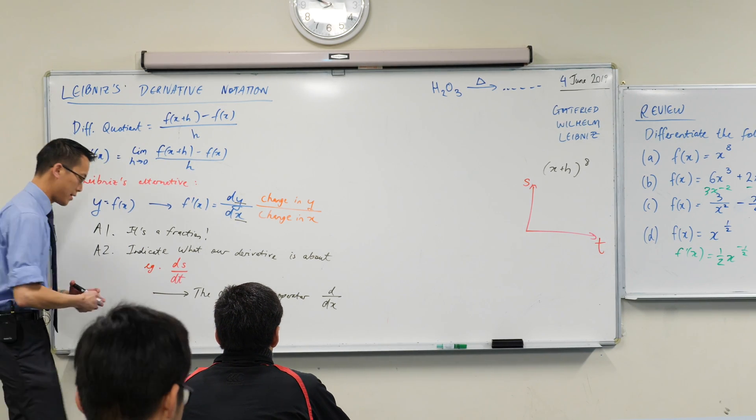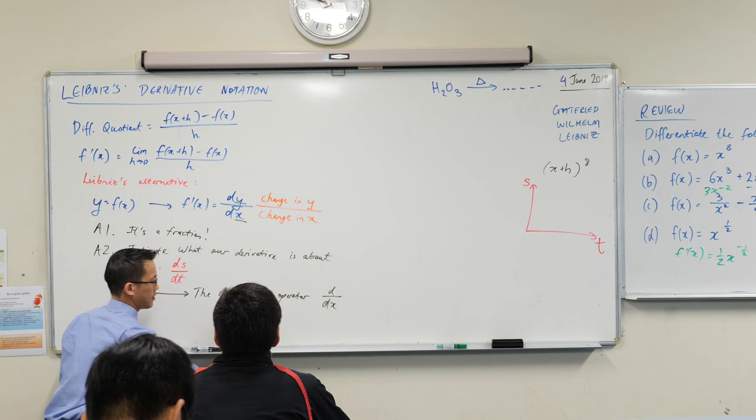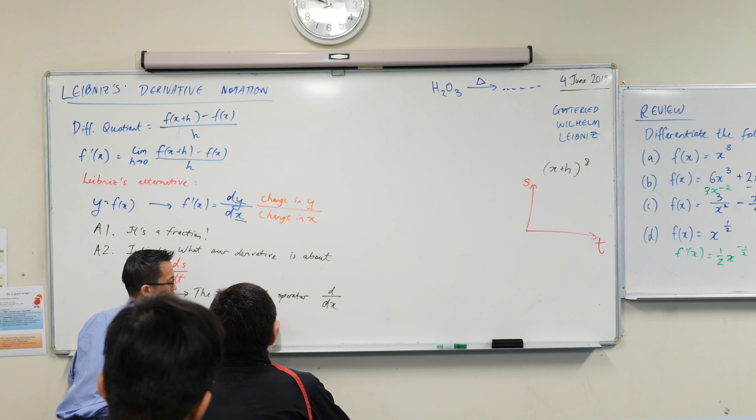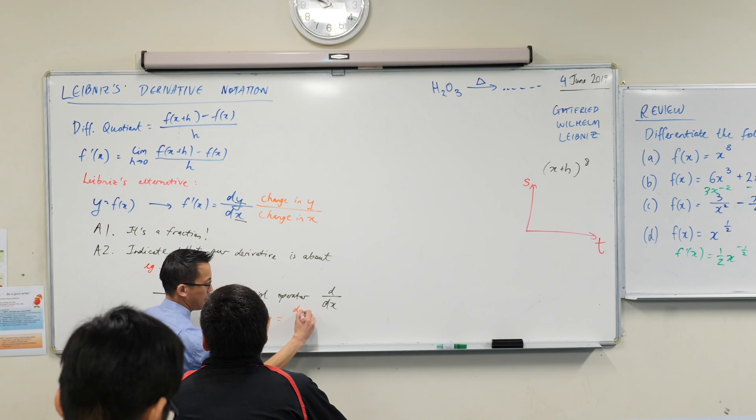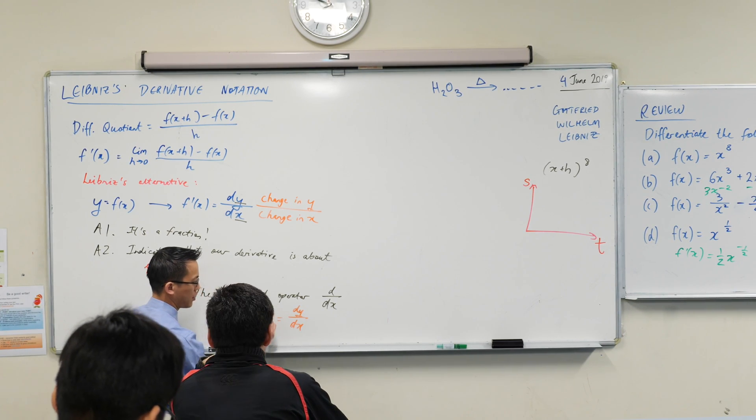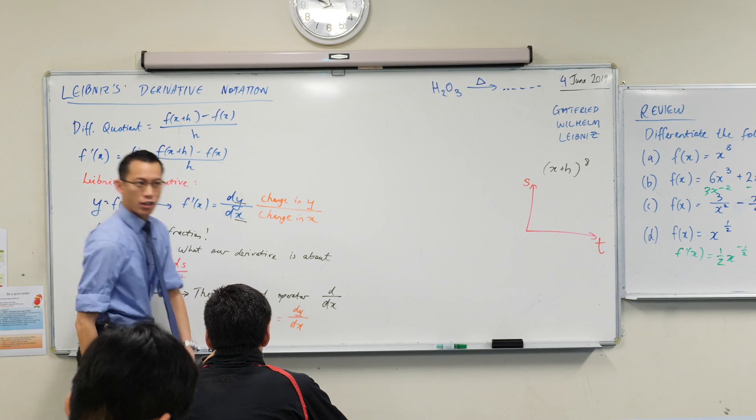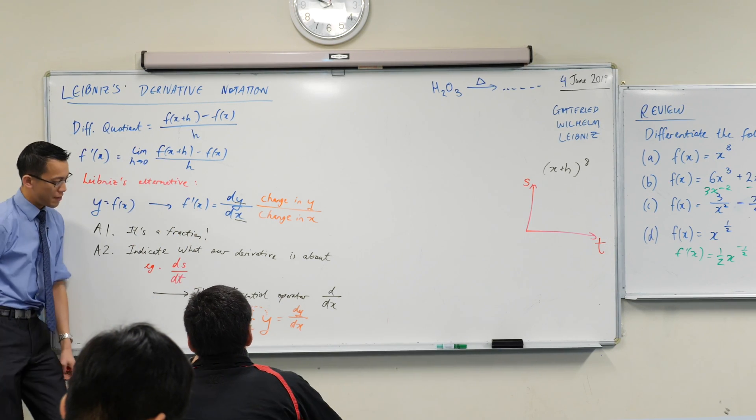Right? So the way you might write this is d on dx of y, that is dy on dx. You can see how that y just kind of jumps up the front, up the top there. Okay? So this is really important to see.